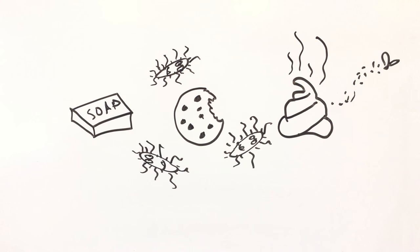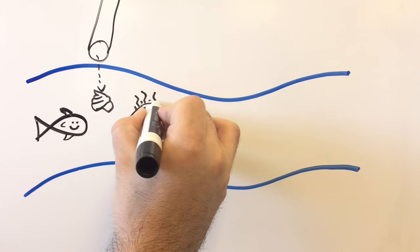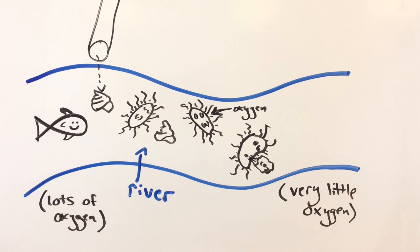So why is this a problem? Just like us, to get energy from what they eat, these microorganisms need to breathe oxygen. This means that the more food you give them, the more oxygen gets consumed from the water.